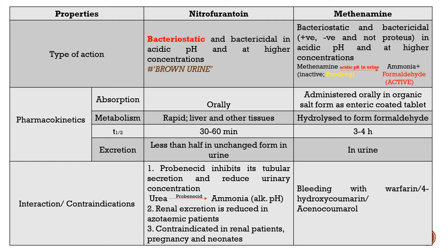Considering interactions and contraindications, it is very important to know that Probenecid interacts with and inhibits the tubular secretion of Nitrofurantoin, reducing its urinary concentration. The logic is that Probenecid converts urea into ammonia, creating alkaline pH. Since Nitrofurantoin works best in acidic pH, in the presence of Probenecid its action is delayed and tubular secretion is inhibited.